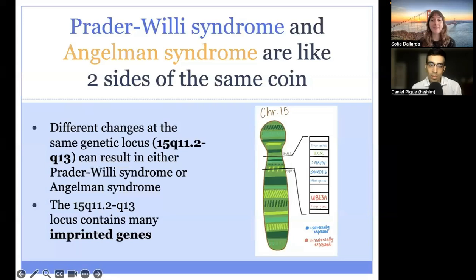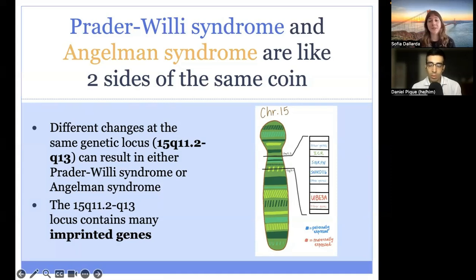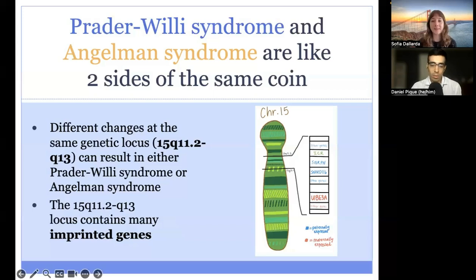We're presenting both of these conditions today because they are like two sides of the same coin. Different changes at the same locus — the 15q11.2 to q13 region, also referred to as the Prader-Willi critical region — can result in either Prader-Willi syndrome or Angelman syndrome. This locus contains many imprinted genes. On the right, we see a simplified representation of this region, showing how some genes are only expressed from the paternal allele and others from the maternal allele.